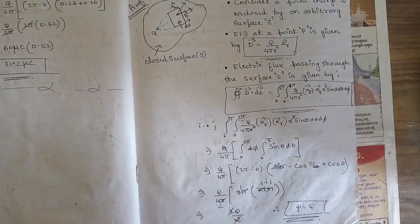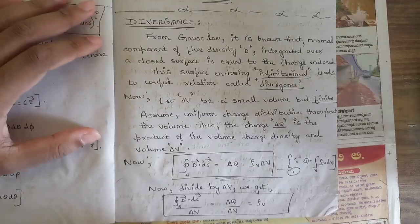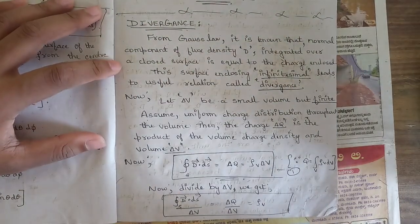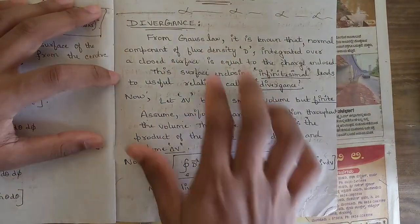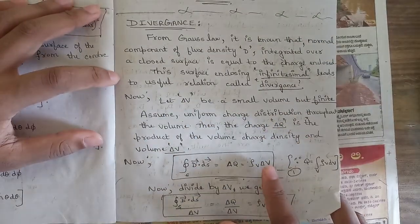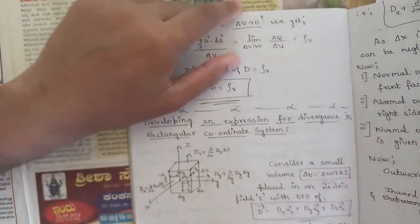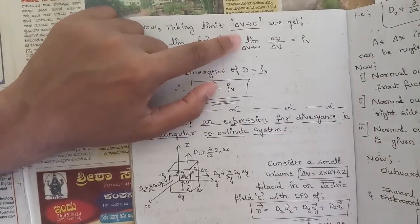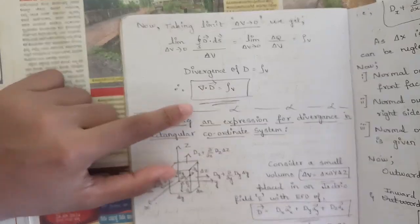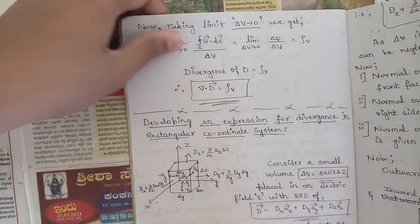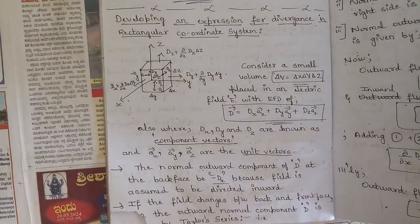One more important concept in Module 2 is divergence. You need the definition along with the necessary equations. Taking ΔV tending to zero gives the relation: the surface integral of D · dS divided by ΔV, leading to ∇ · D = ρ_V. Also important is developing an expression for divergence in the rectangular coordinate system.